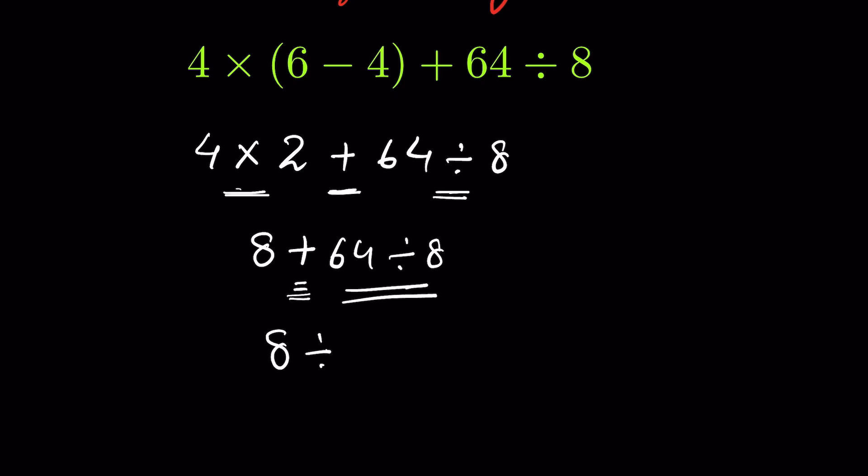So 64 divided by 8 is 8. Now 8 plus 8 is 16. So 16 will be the correct answer. What is your answer? Let me know in the comment section. Thanks for watching.